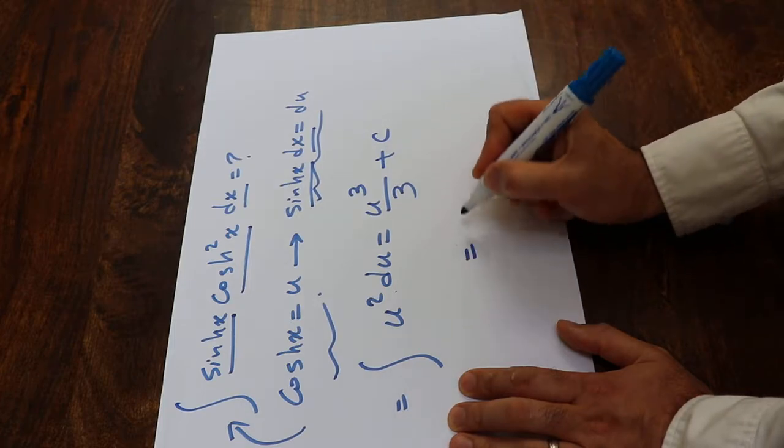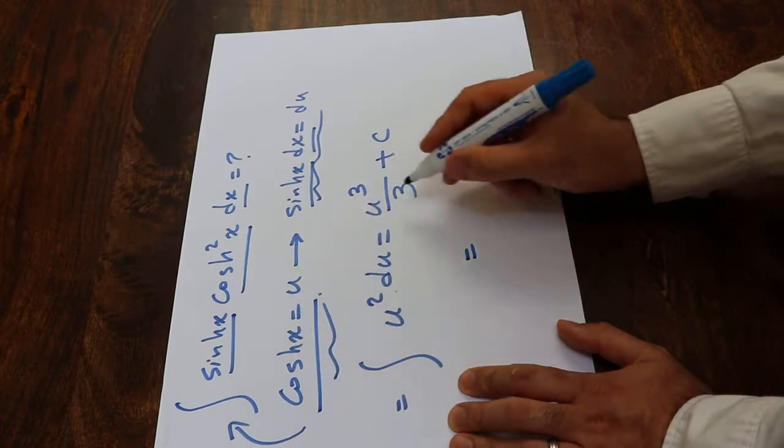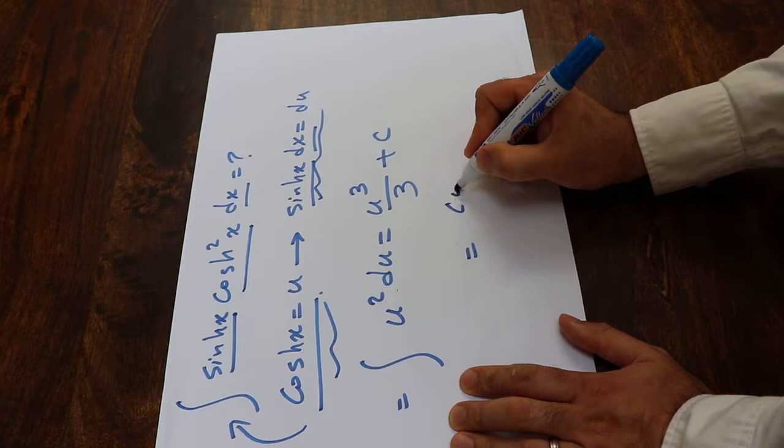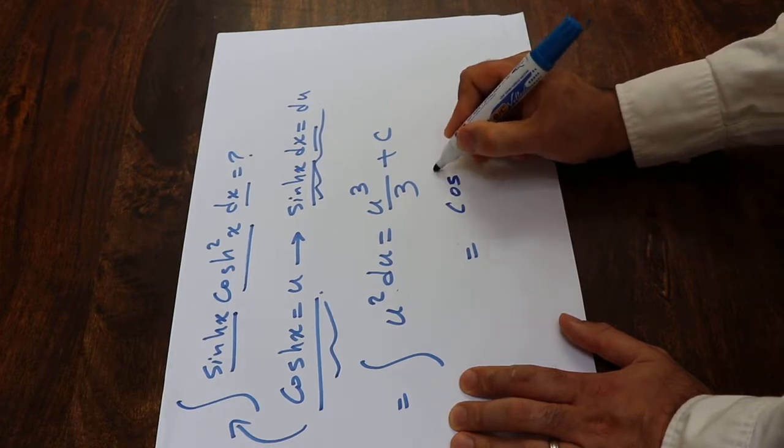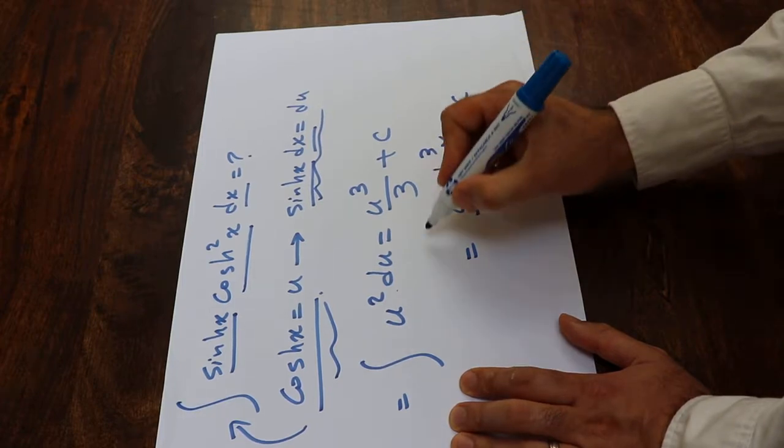So all you need to do here is to substitute this parameter u with the definition of u, which is hyperbolic cosine x. Therefore this will be equal to hyperbolic cosine x to the power of 3 divided by 3 plus c.